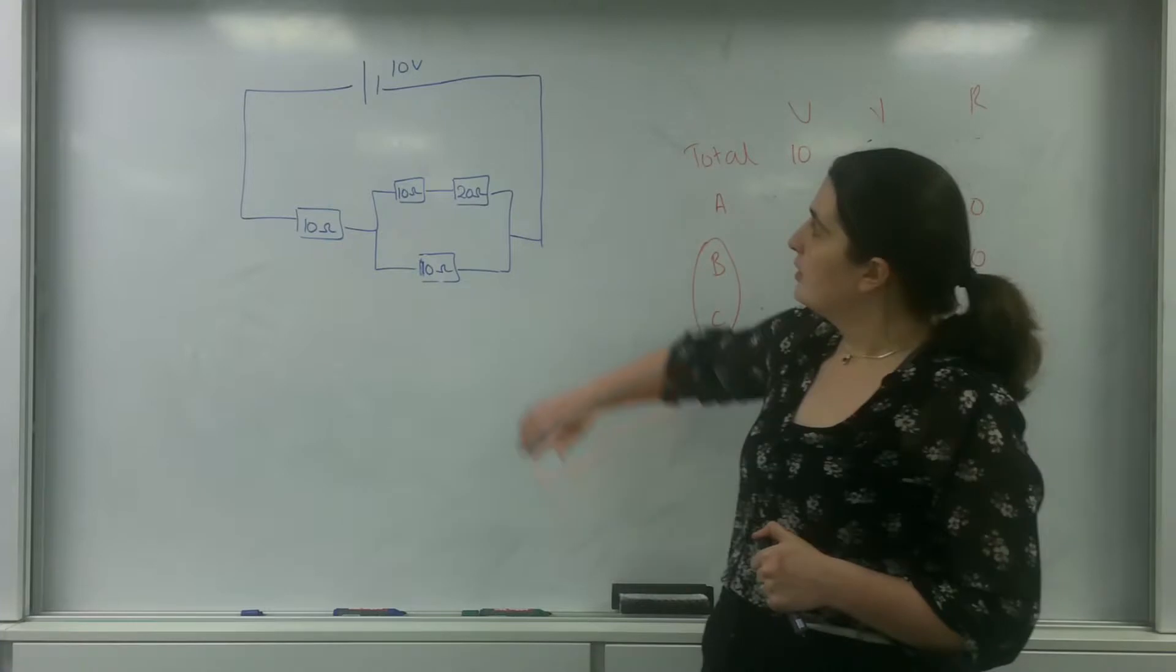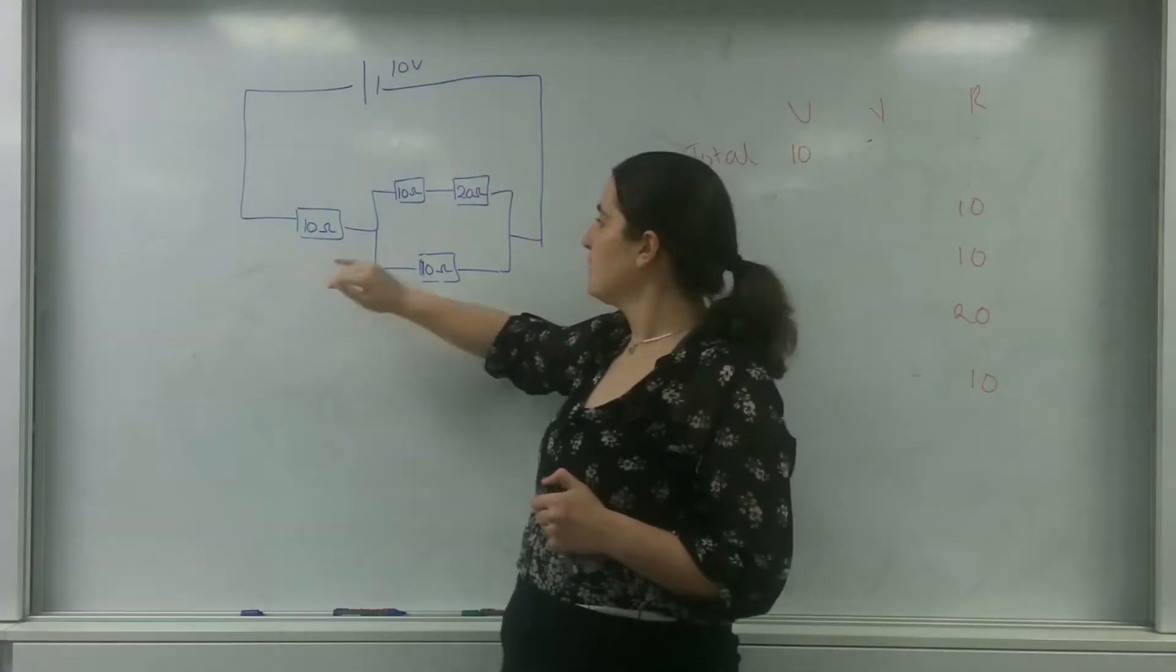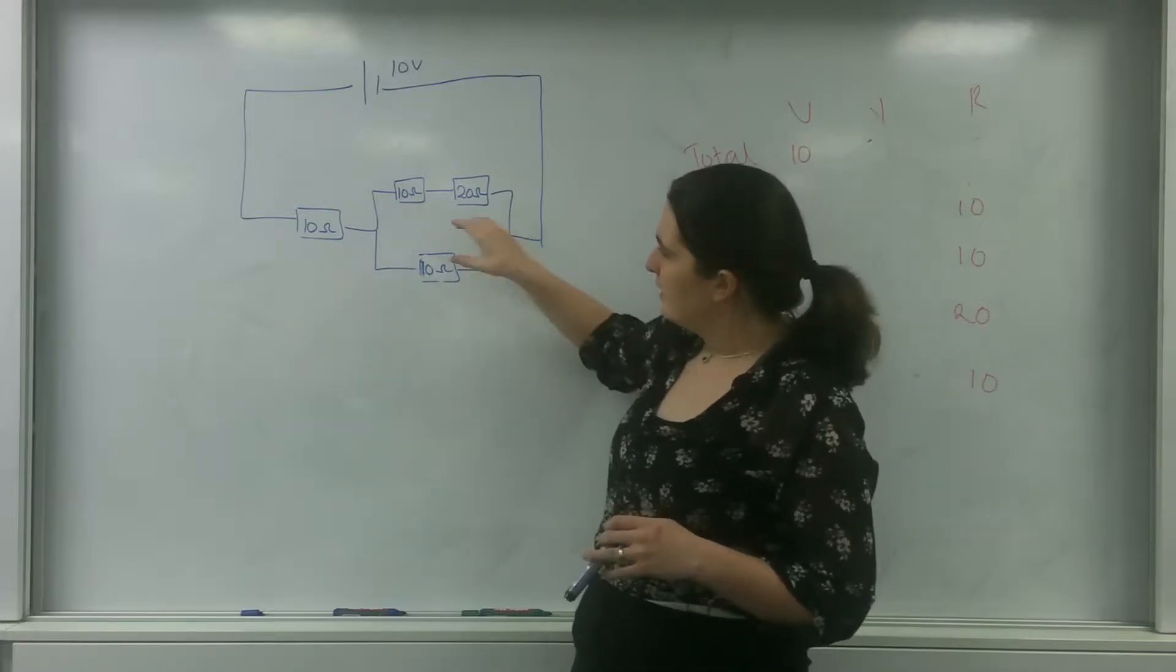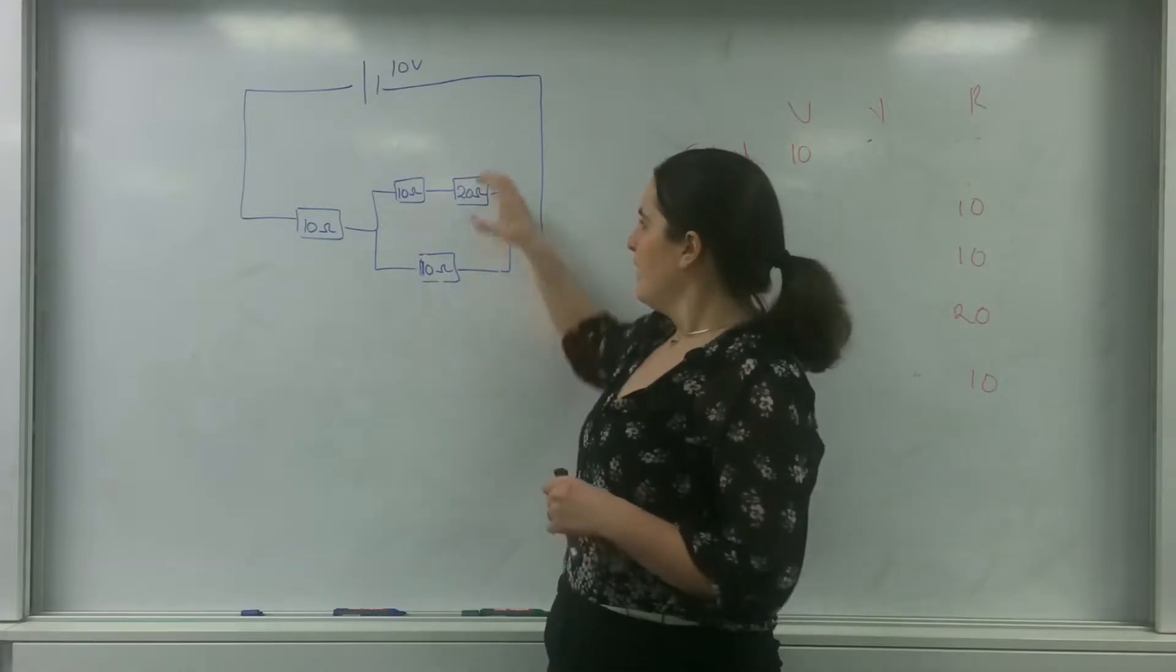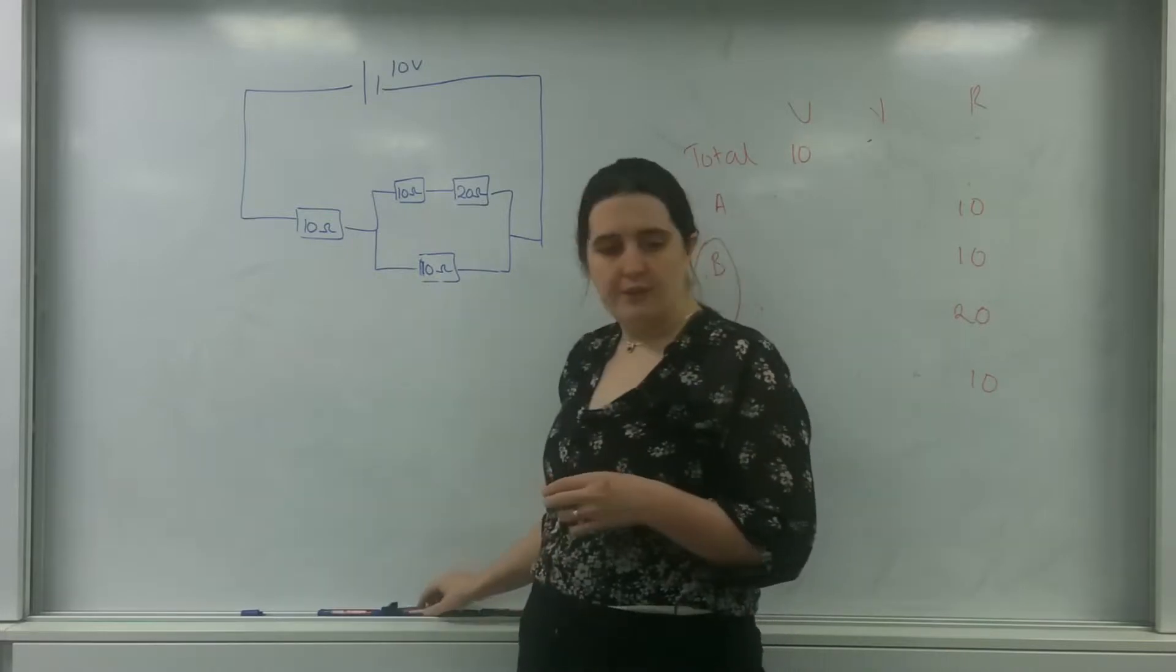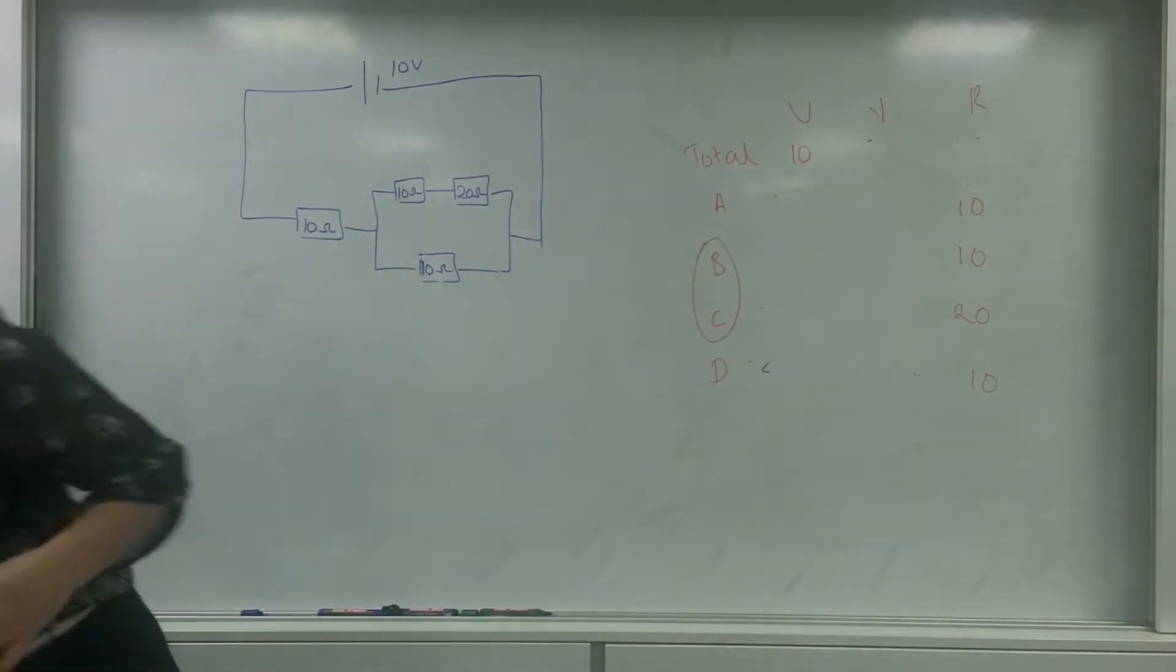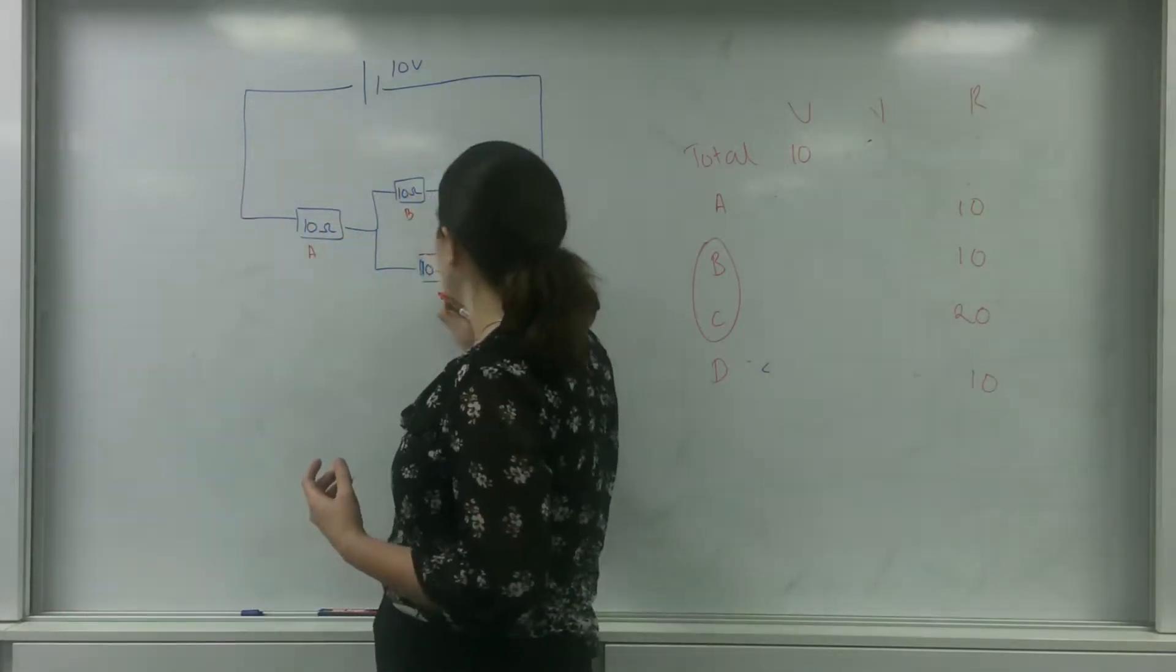So I have got 10 volts of potential. I've got a 10 ohm resistor, a 10, a 10, a 20, and a 10. This one is in series with this complicated bit here. These are in series with each other but they're in parallel with this one. And the first thing I'm going to do is I'm going to label all of these resistors. I'm going to label this A, B, C, and D.